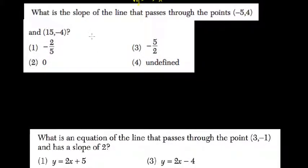Okay, what is the slope of the line that passes through these two points? Negative 5, 4, and 15, negative 4.